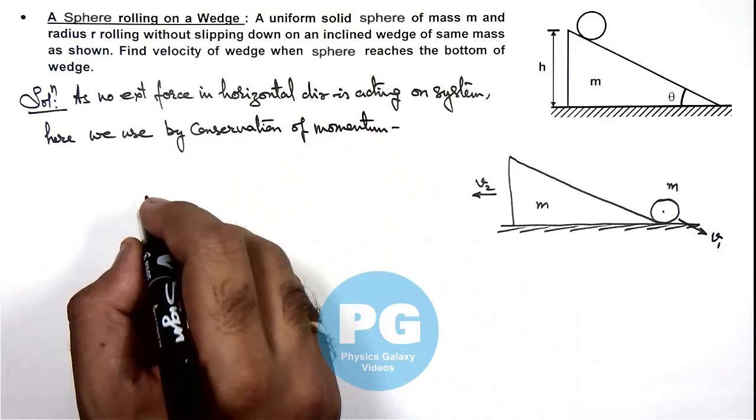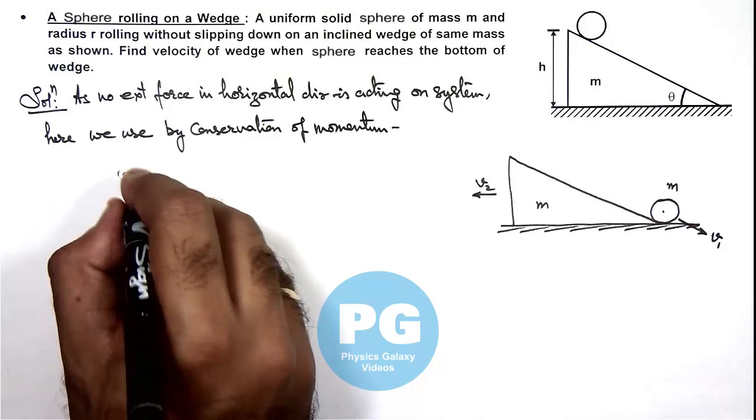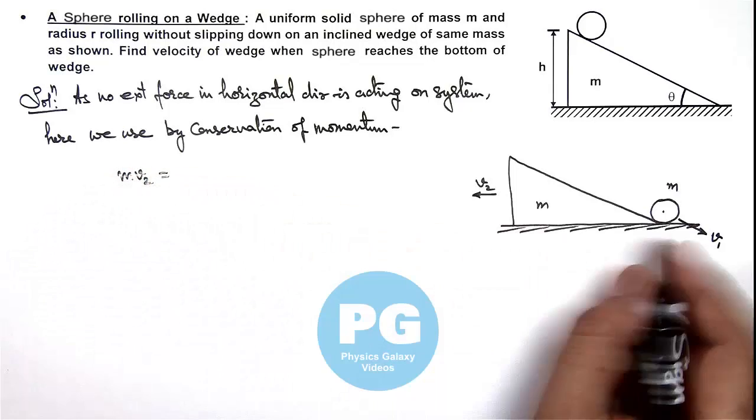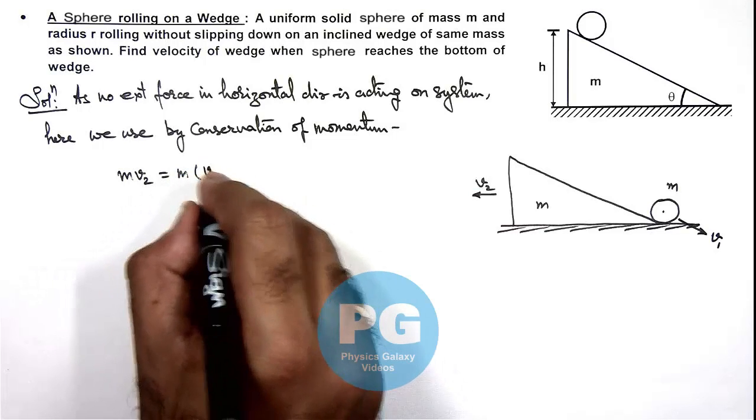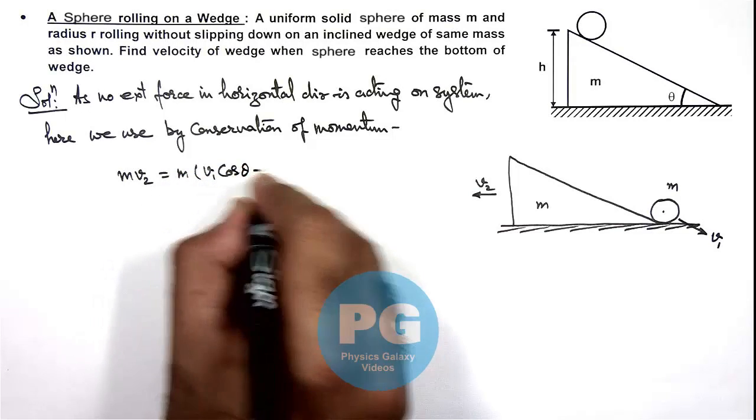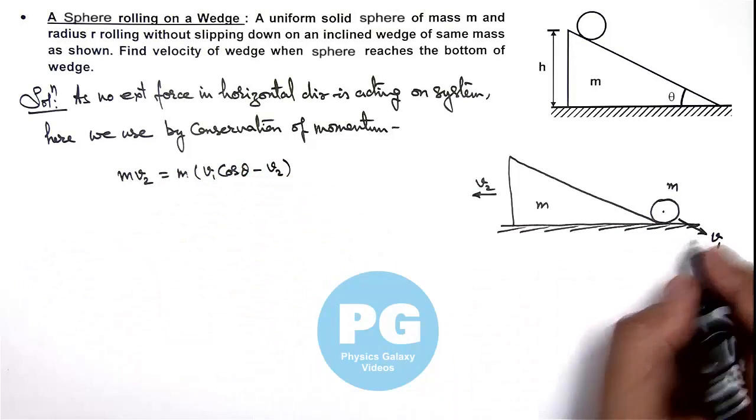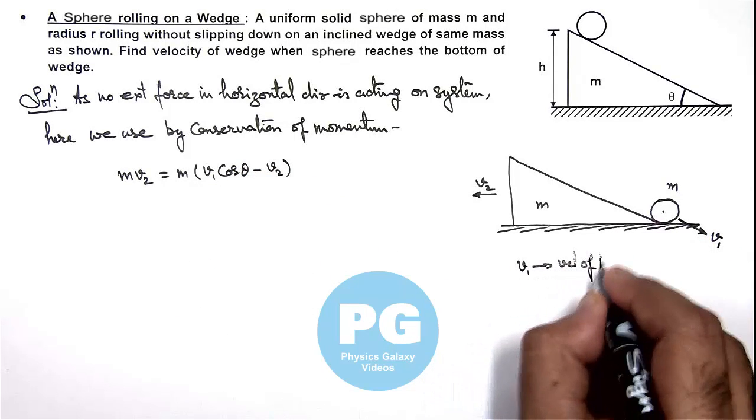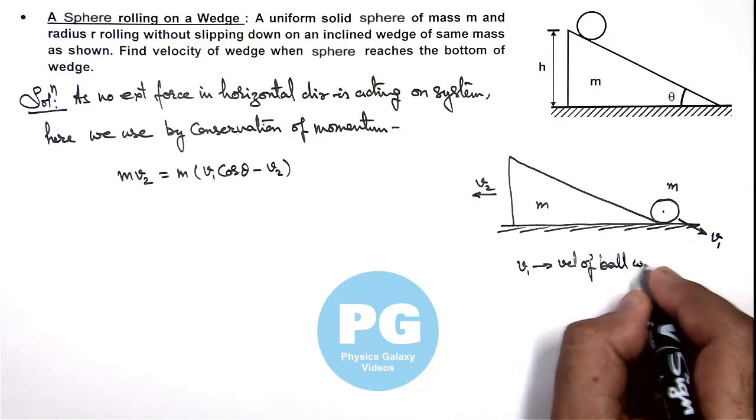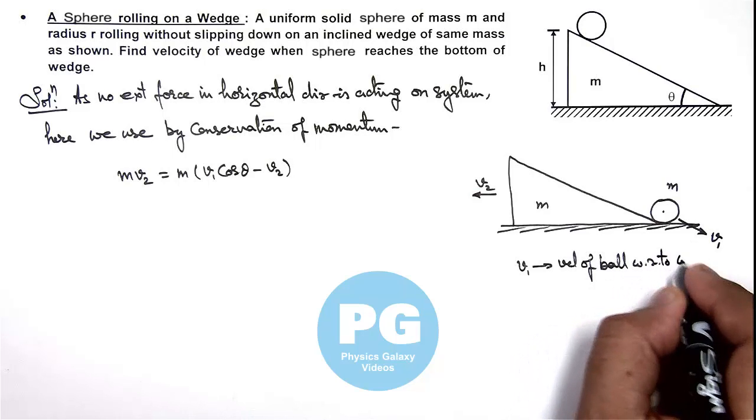As here we can write toward left the wedge is attained a momentum m v2, and toward right the ball is attain a momentum m times (v1 cos θ minus v2), because here we have taken the v1 as velocity of ball with respect to wedge.